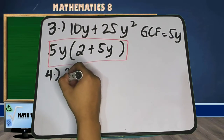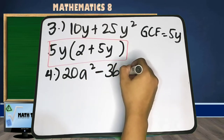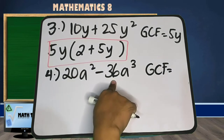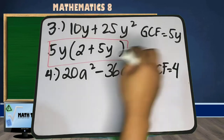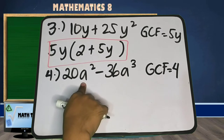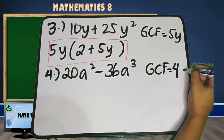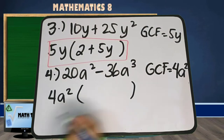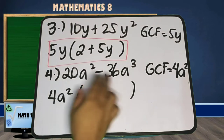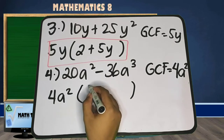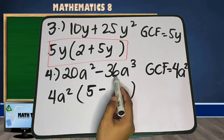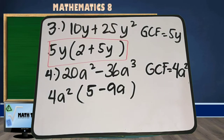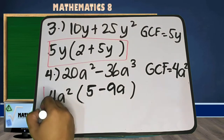Number 4: 20a squared minus 36a cubed. Find the greatest common factor or GCF. In 20 and 36, the greatest common factor is 4, and the variable with the smallest exponent is a squared. So the GCF is 4a squared. Let's factor out 4a squared, and divide each term by 4a squared. So 20a squared divided by 4a squared is 5. Minus 36a cubed divided by 4a squared is 9a. So our factor now is 4a squared times the quantity 5 minus 9a.